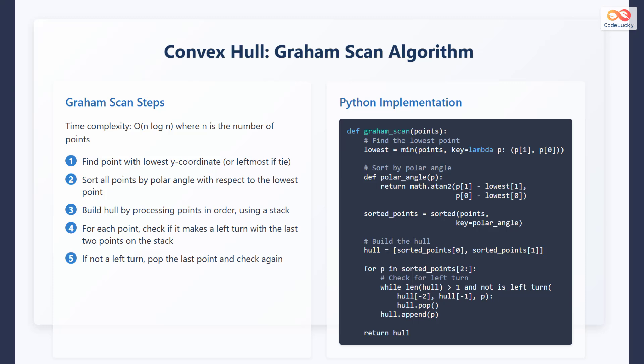Step 1, find the point with the lowest y coordinate, or the leftmost if there is a tie. Step 2, sort all points by their polar angle with respect to the lowest point. Step 3, build the hull by processing points in order using a stack.